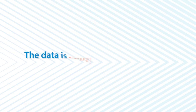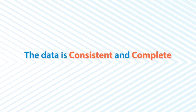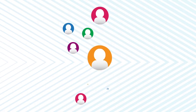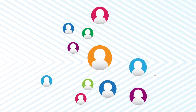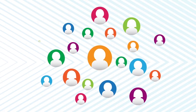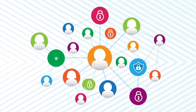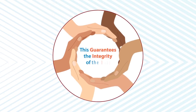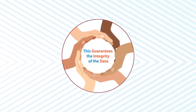The data is consistent and complete. Because of how the blockchain works, with each transaction in a block and each block interlinked and timestamped, the transactions cannot be altered or removed. This guarantees the integrity of the data.